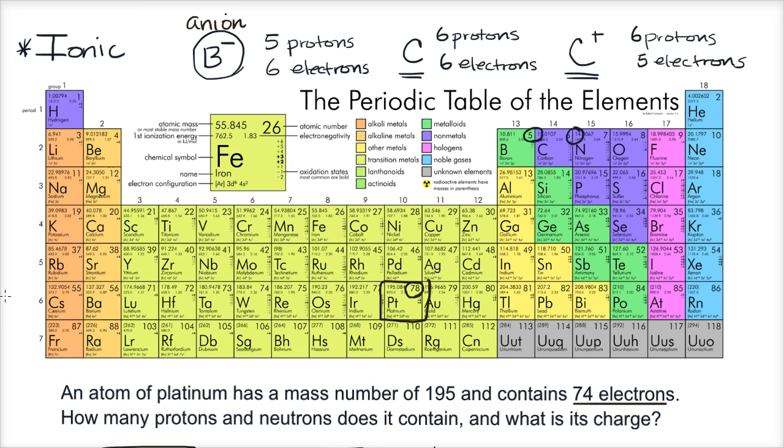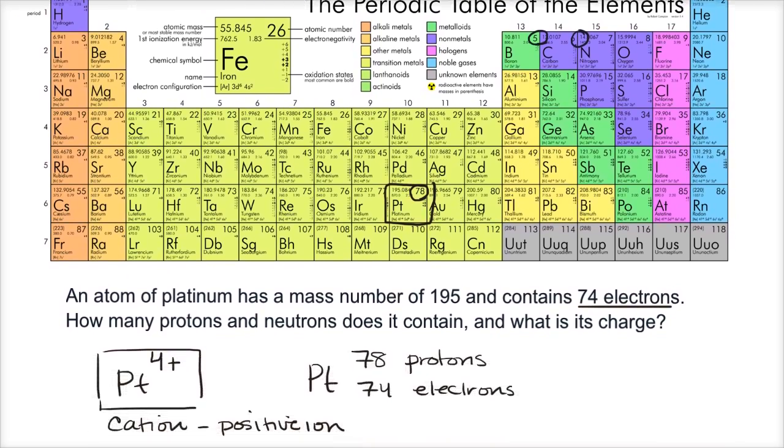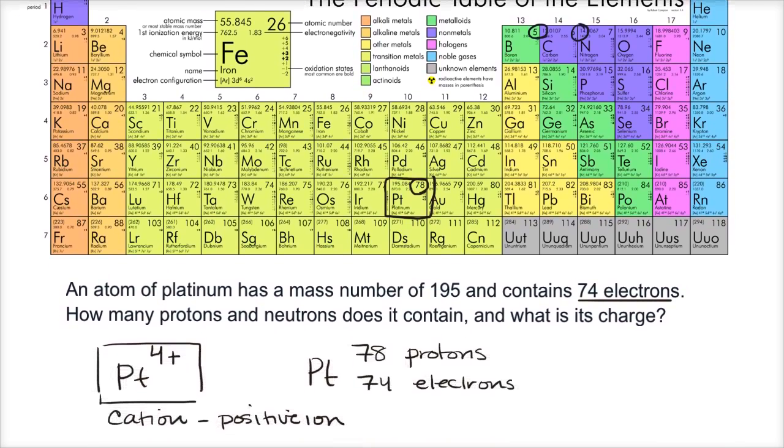This is just to get ourselves used to some of the terminology. But we're not done answering the question. They say an atom of platinum has a mass number of 195 and it contains 74 electrons. How many protons and neutrons does it contain, and what is its charge? We figured out its charge. We know the protons. By definition, platinum has 78 protons. But what about its neutrons?